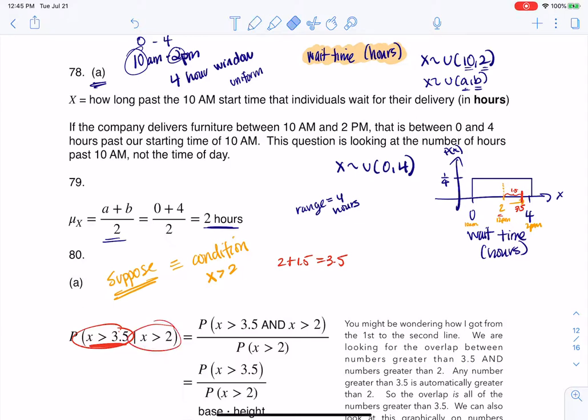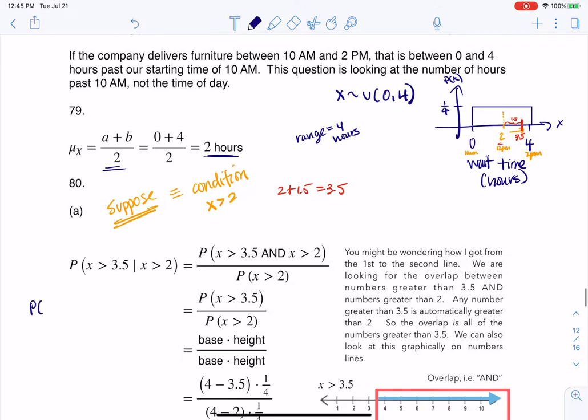And with that conditional probability, it starts us on our path with our conditional probability formula from chapter 3. So let's refresh our memories here. We know the probability of A given B is the probability of A and B over the probability of B.